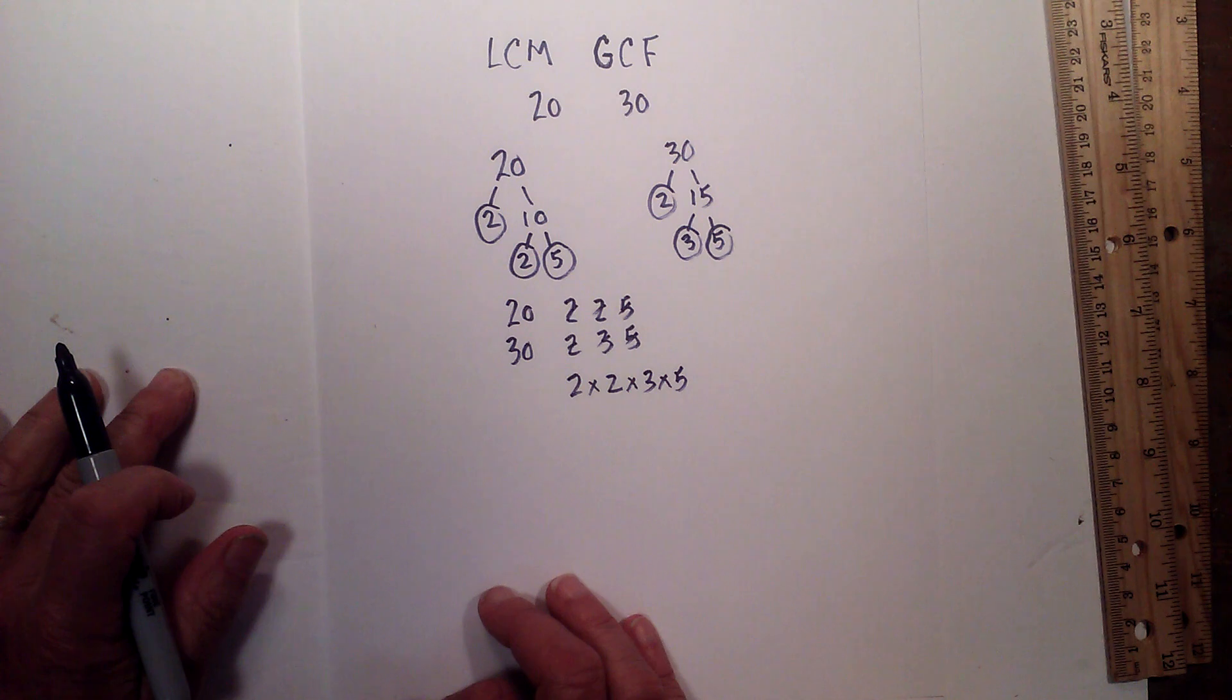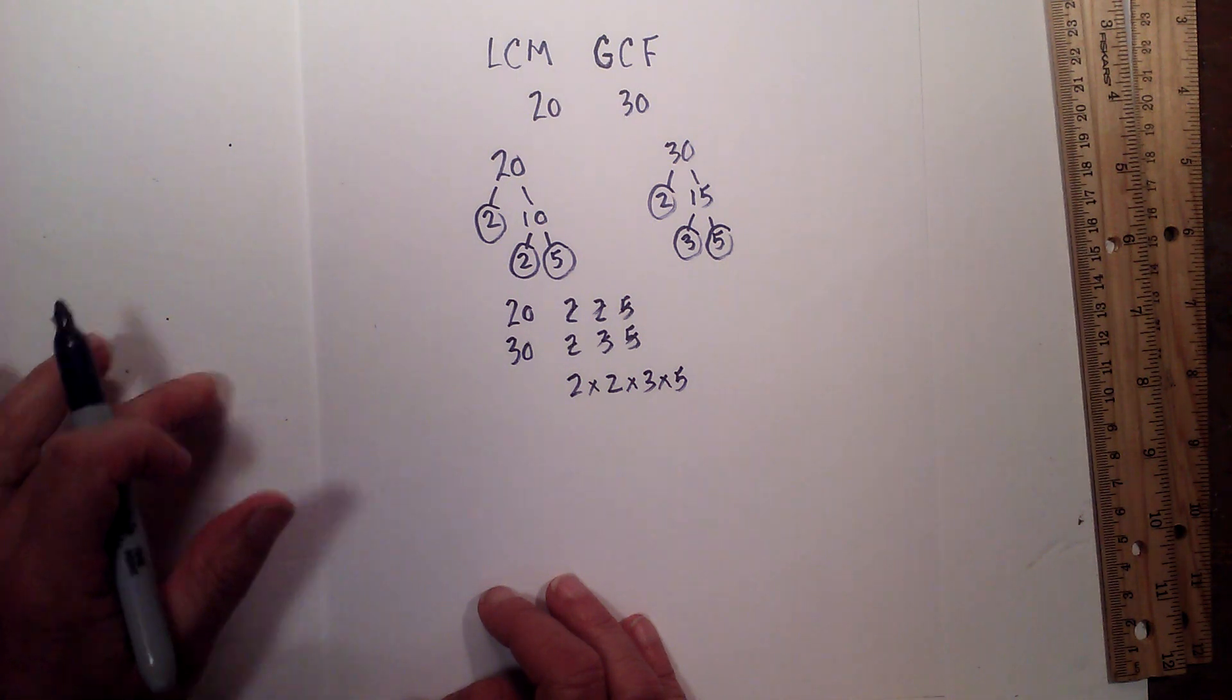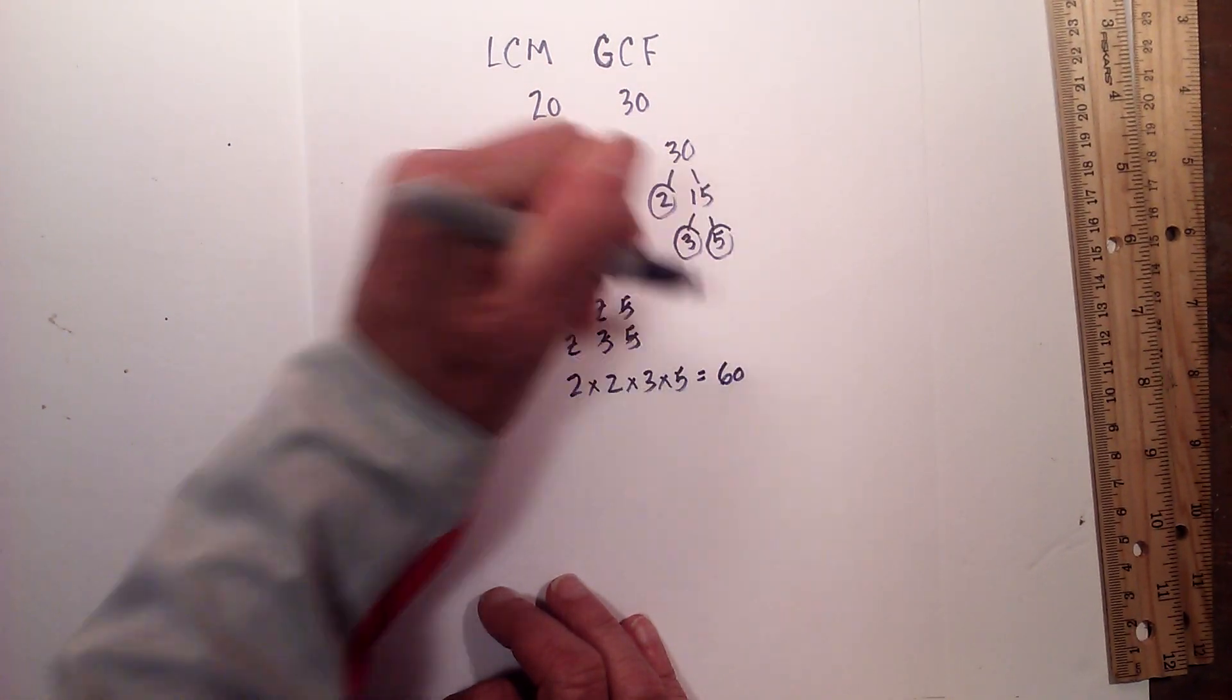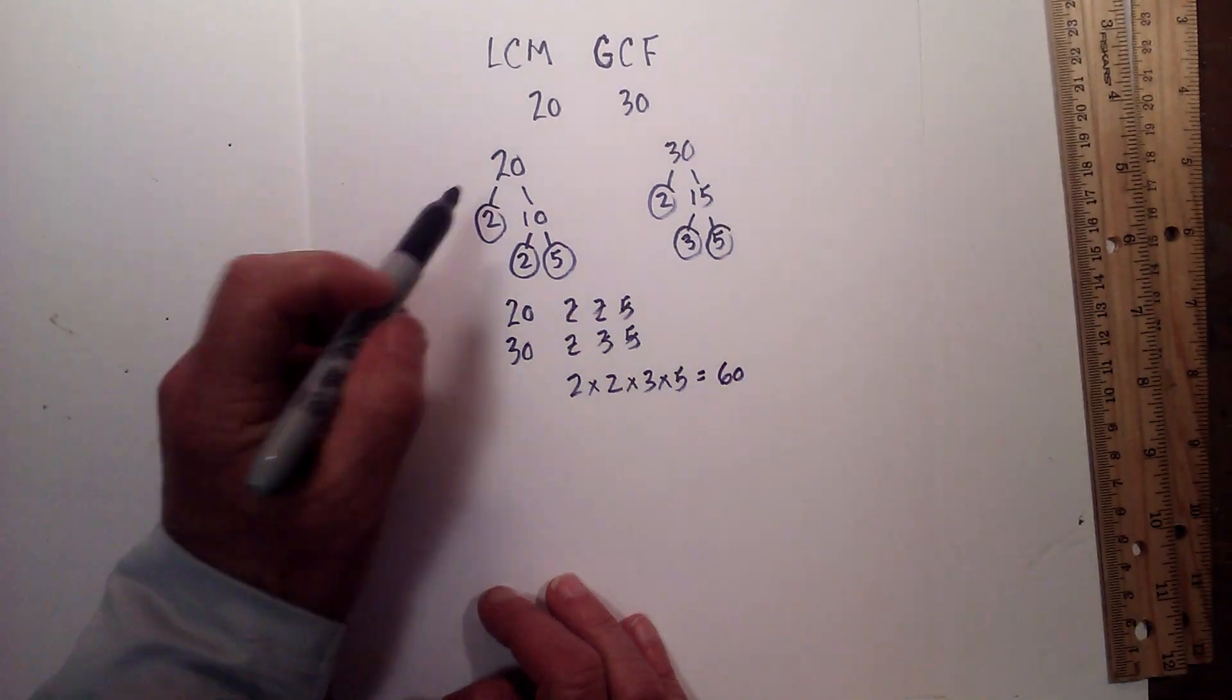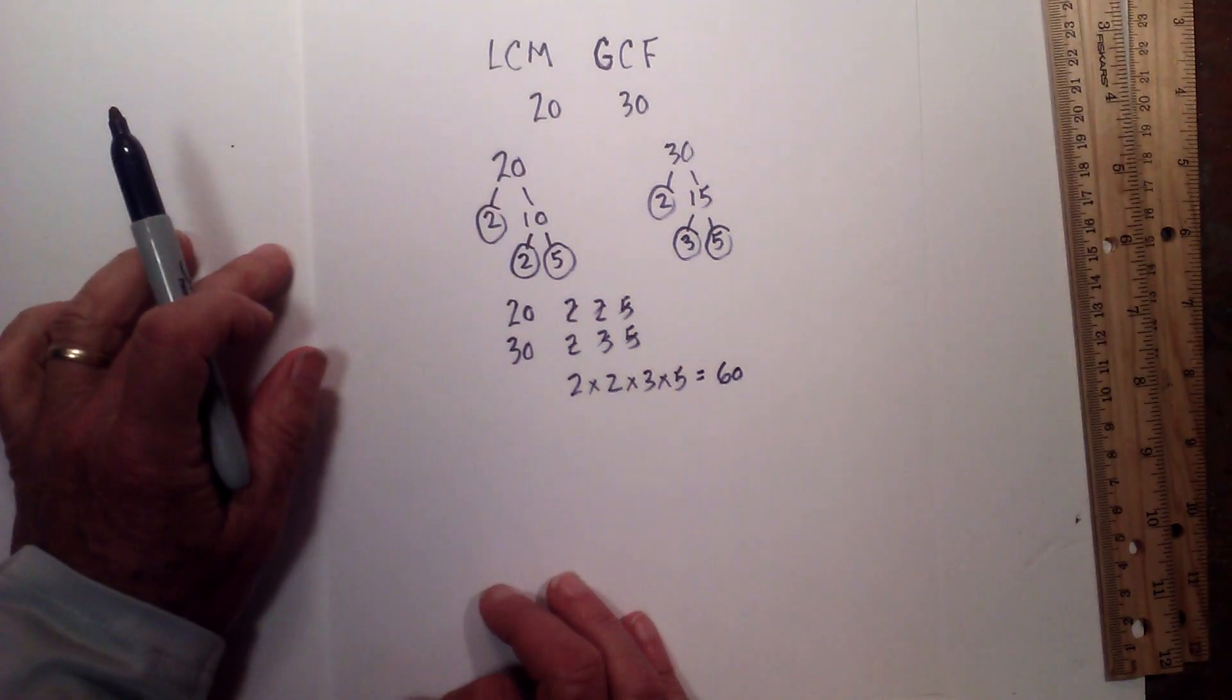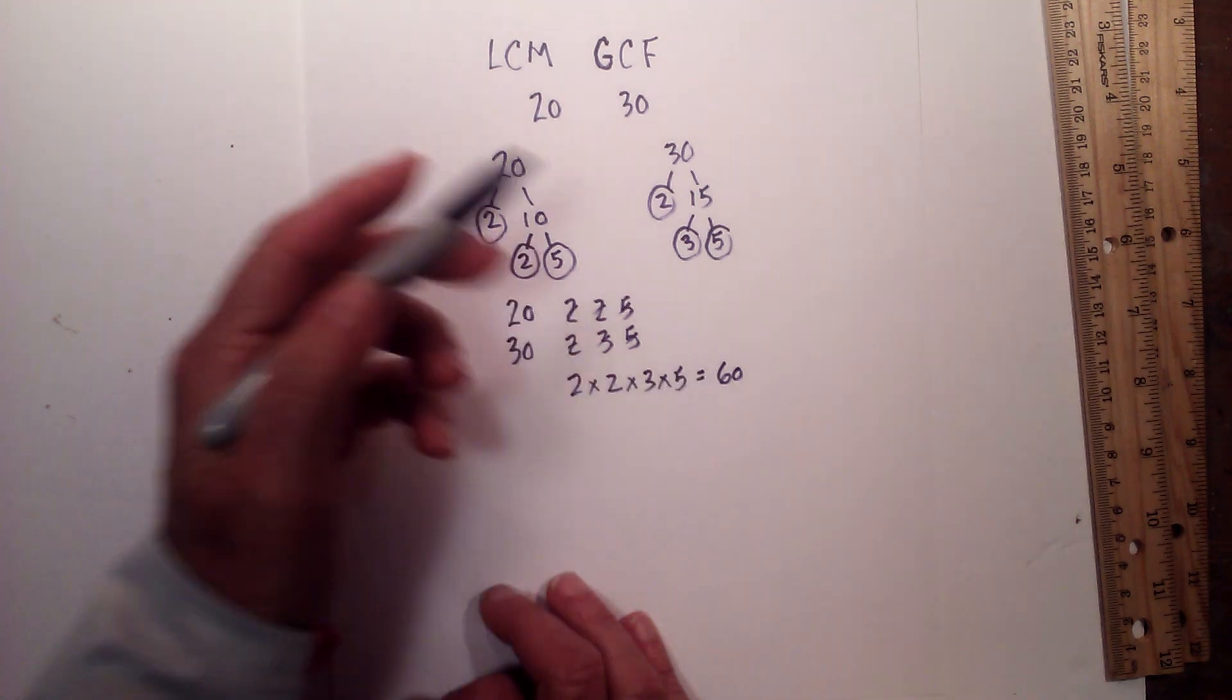So now 2 times 2 times 3 times 5 is 60. So the smallest number that both 20 and 30 will multiply into, or the LCM, is 60.